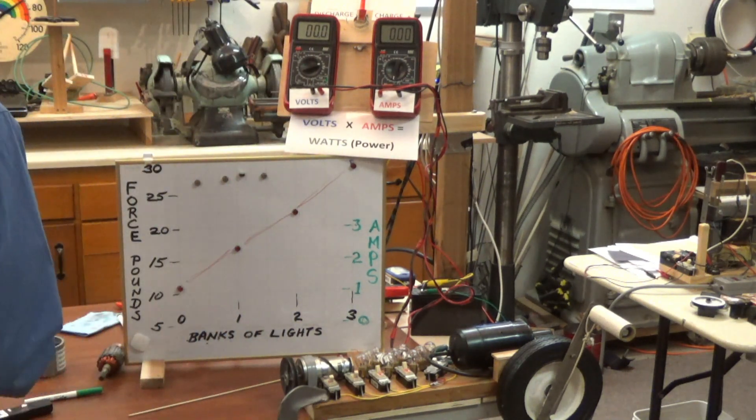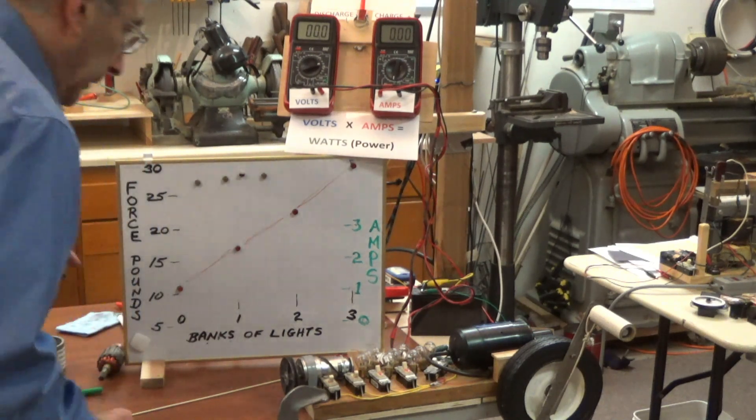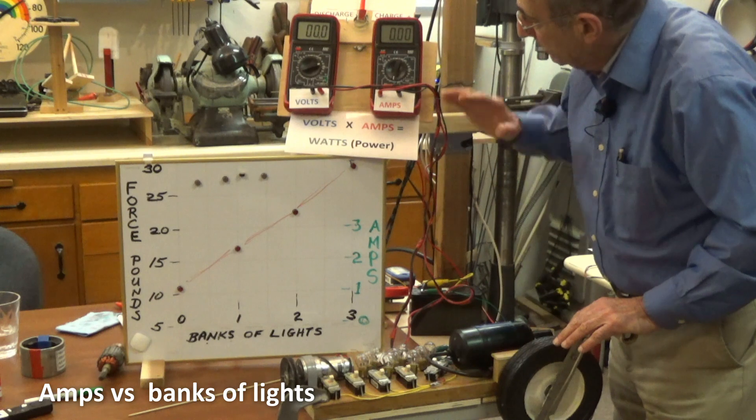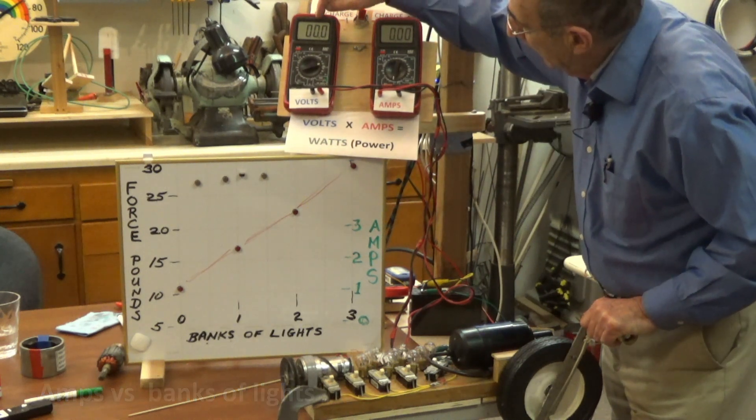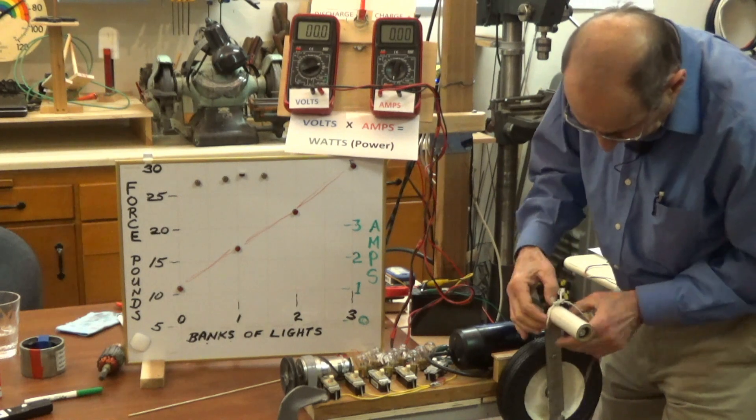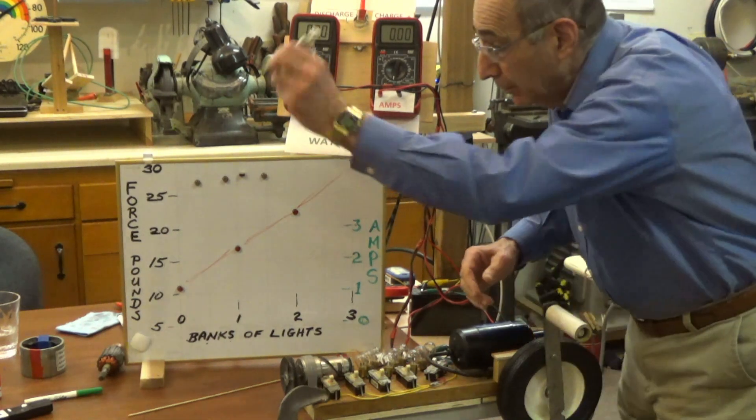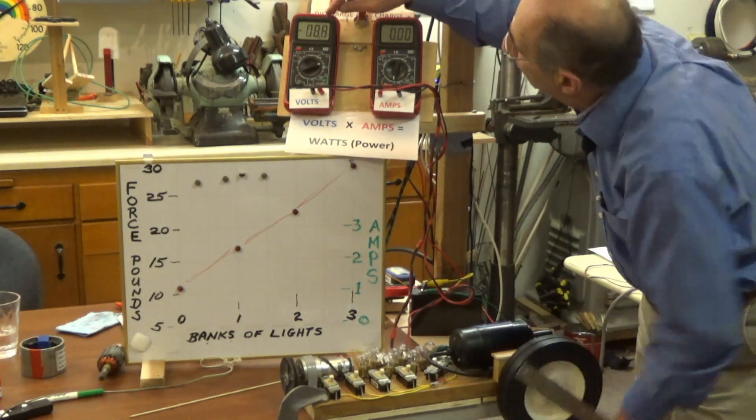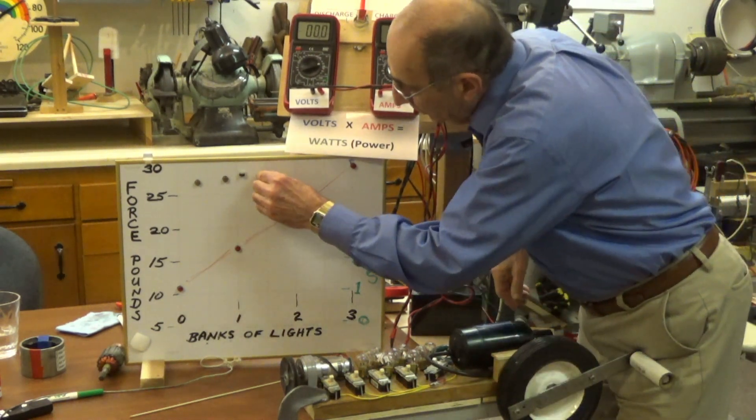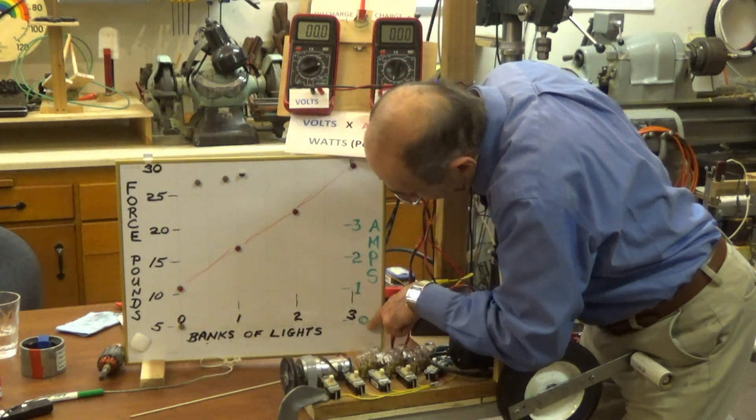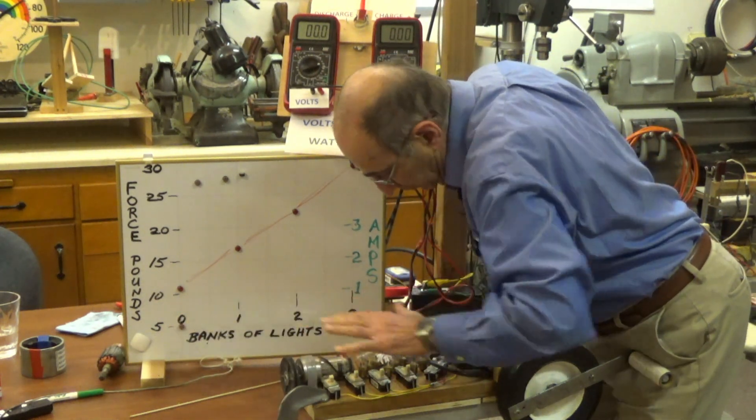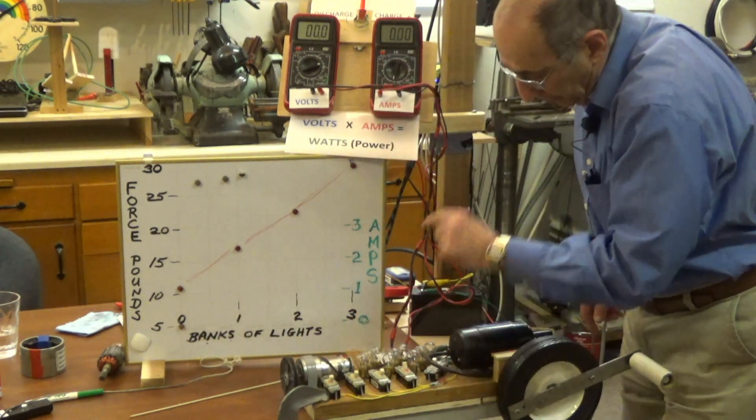Now what I'd like to do is sort of repeat the experiment, only I'm just going to crank it this time and we want to look at the amps when I get to about 9.5 to 10 volts. First, there are no lights connected, the switches are all off. At 10 volts, obviously there's no amperage because there's nothing in the circuit, so I'm going to put this button at zero amps.